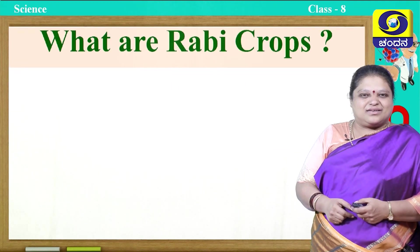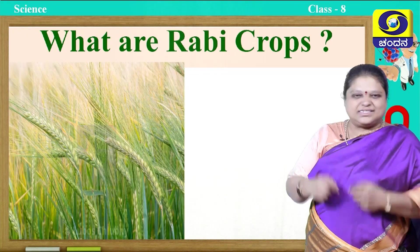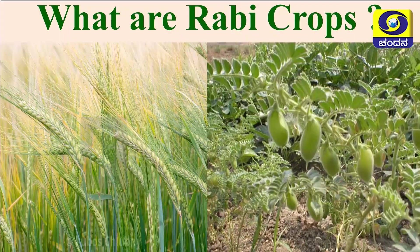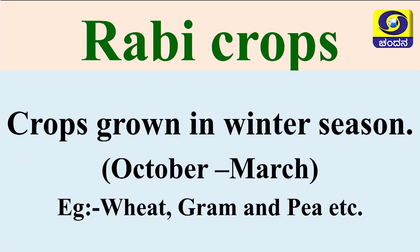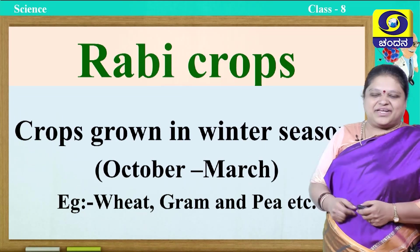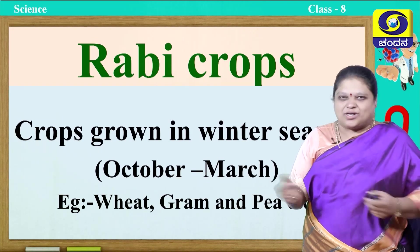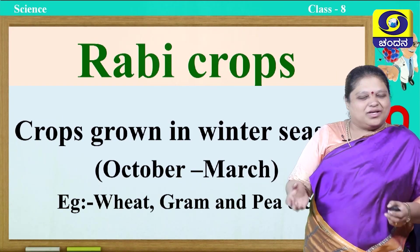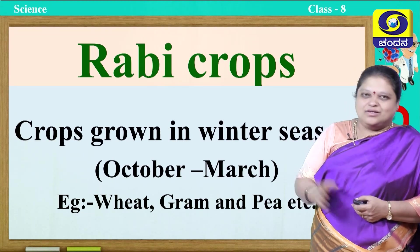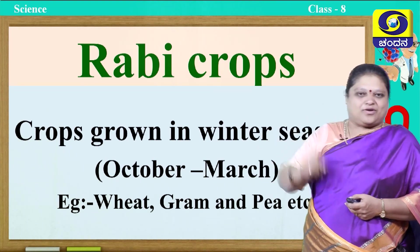Next we will see what are Rabi crops. Rabi crops are usually grown in the winter season. You can see wheat here, you can also see chickpea. Usually these are grown in the winter season, from October to March. Examples are wheat, grams, and a few peas, etcetera. You can see what is grown in your areas and in your lands and make note of them. Basically there are two crops — one is Kharif crops and another one is Rabi crops.